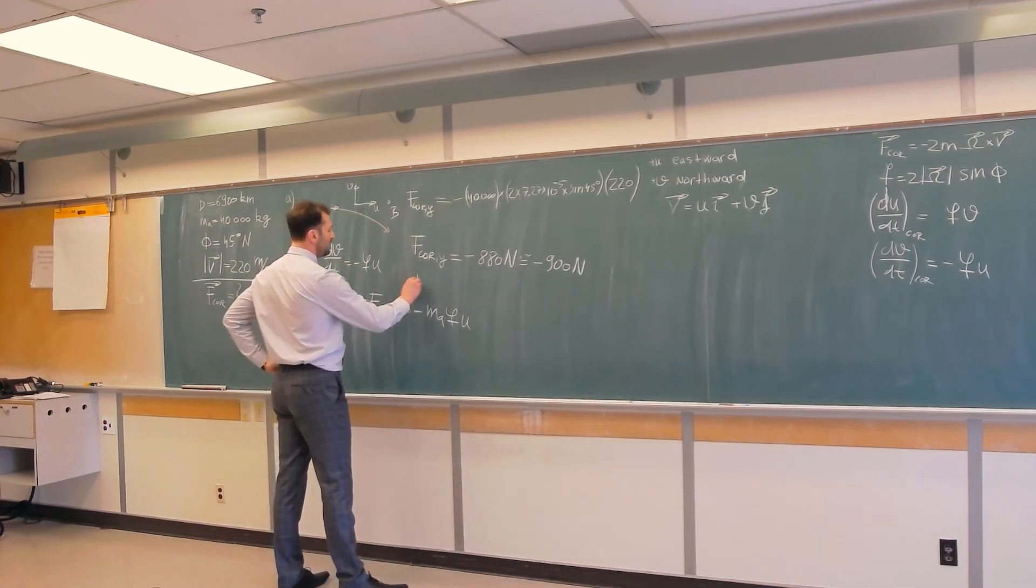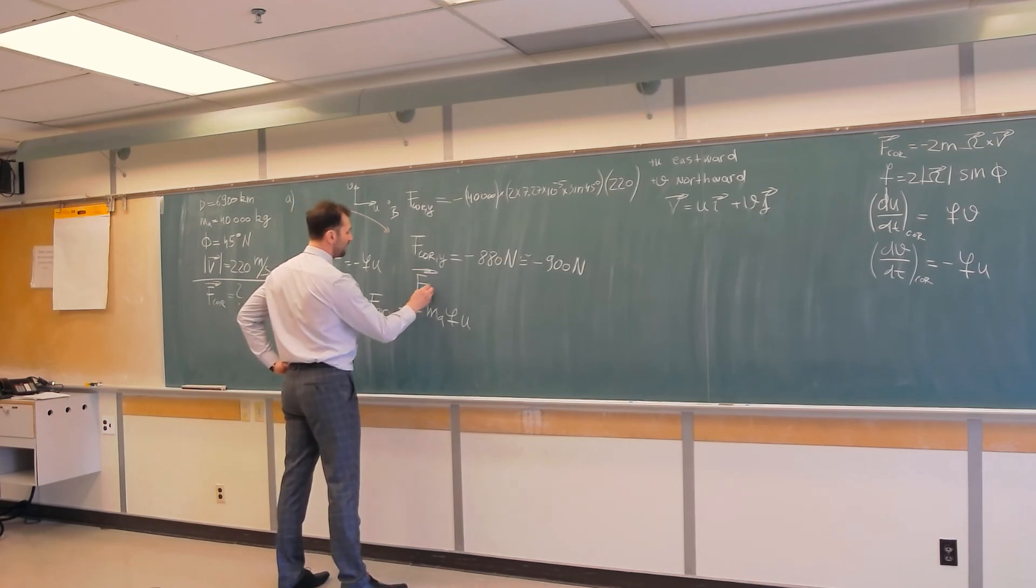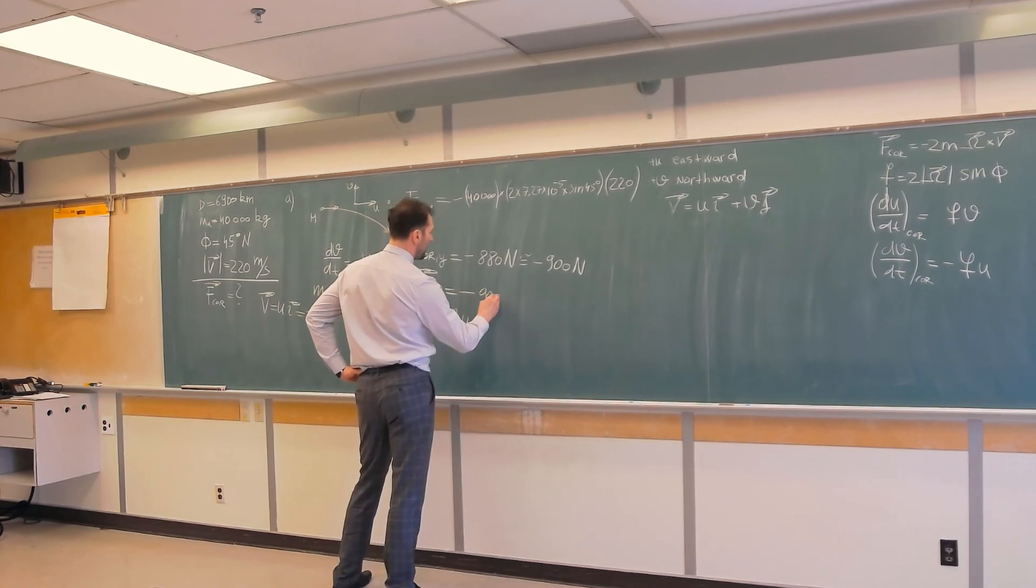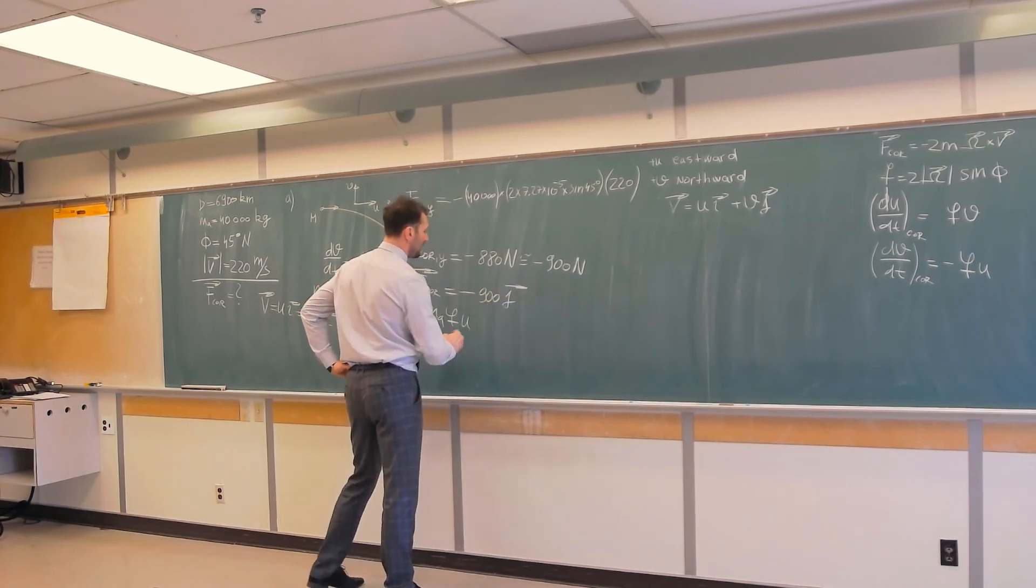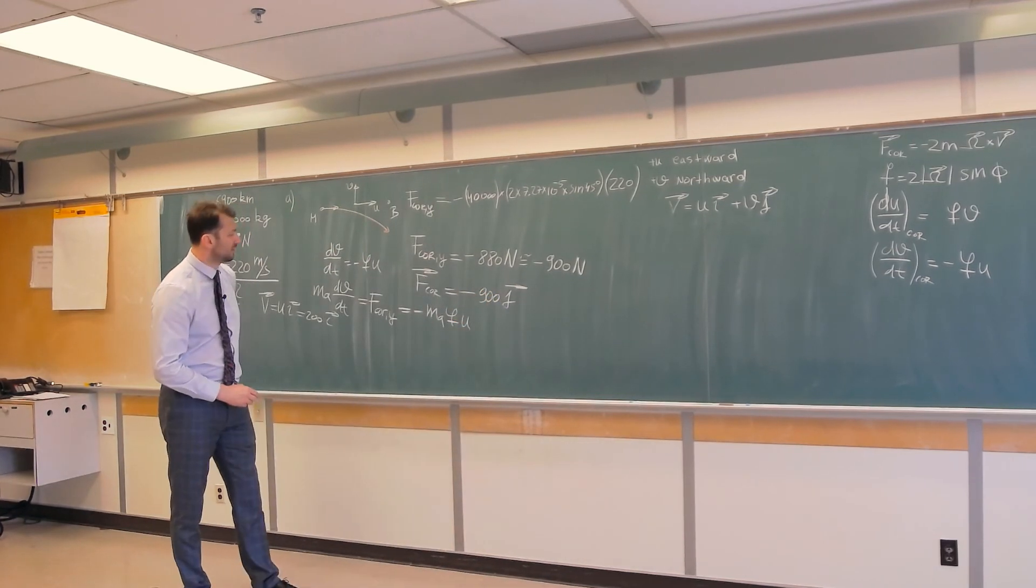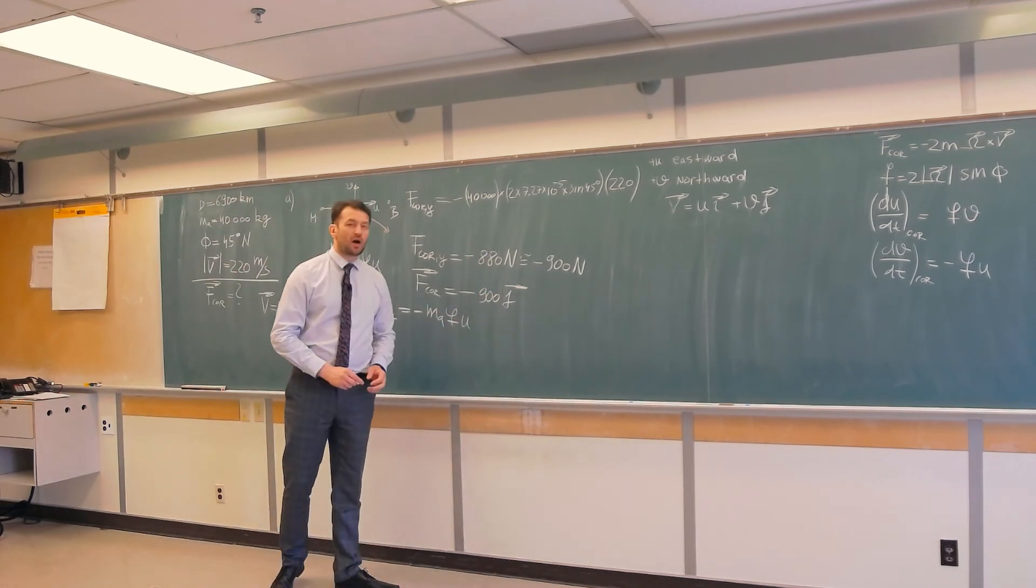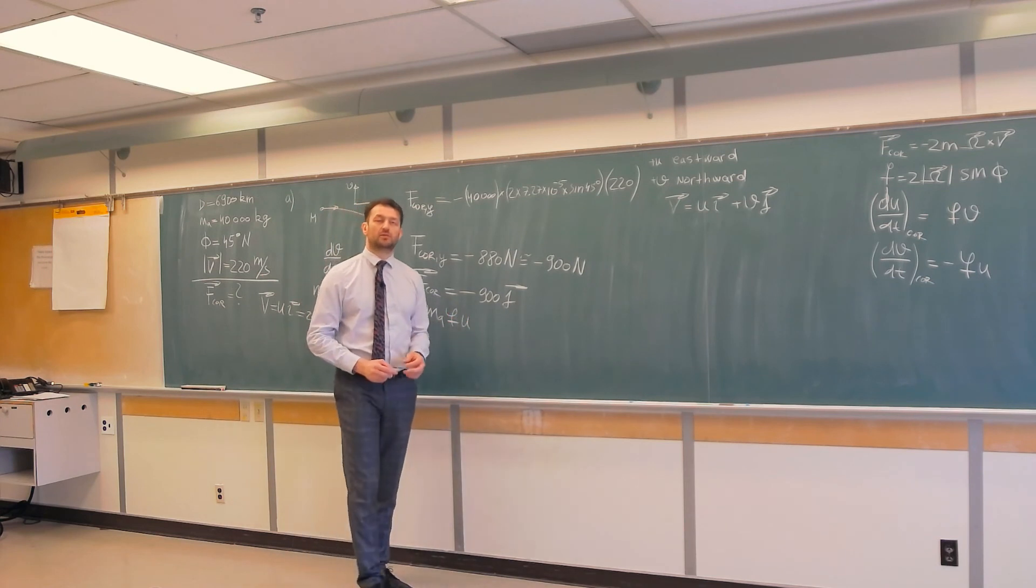Or, if we want in vector form, f Coriolis is negative 900 j, because j is unit vector in the northern direction. So that's not that large a force, but nevertheless it exists.